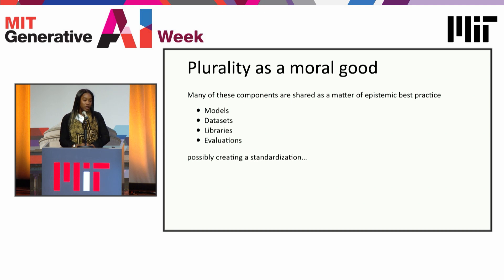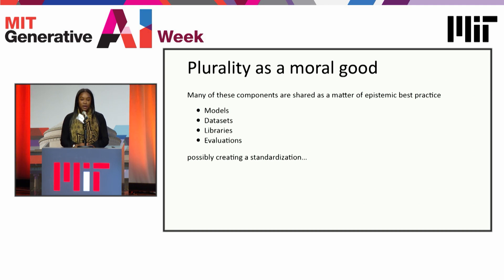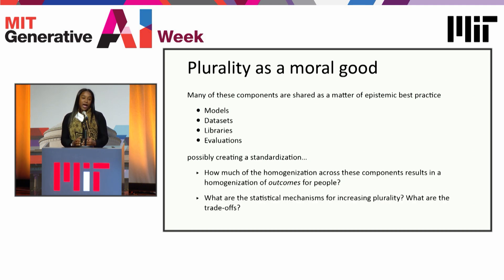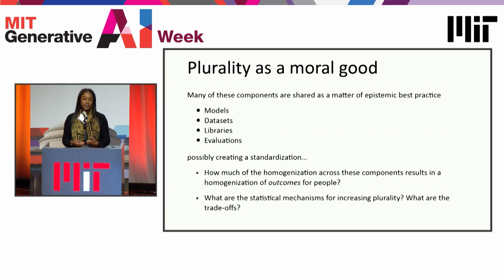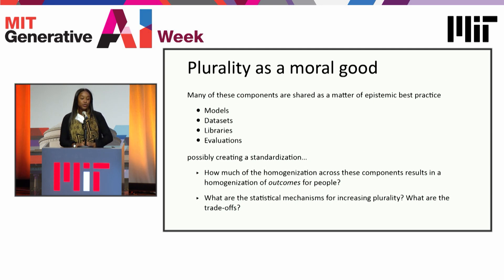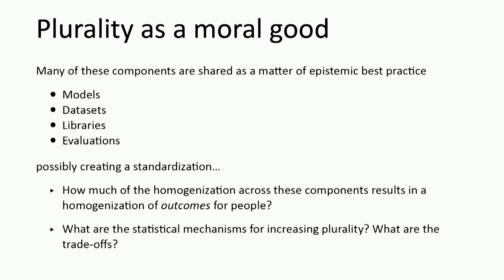What we seek to understand is to what extent opportunities are made less plural because of foundation models and, generally speaking, our economic system of algorithmic decision-making. Many of the components are shared when we develop these models as a matter of epistemic best practice — we share models, data sets, libraries, and evaluations across many actors, and this could potentially create a standardization. What many scholars and I have been trying to understand is how much of this homogenization across components results in a homogenization of outcomes for people, and what statistical mechanisms can be utilized to increase plurality without sacrificing other values we might care about, such as validity or accuracy.